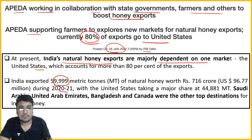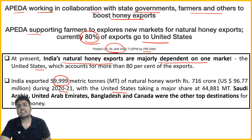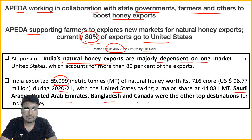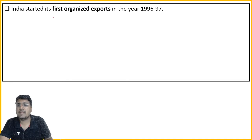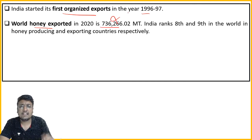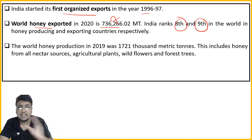The major share was to the US. In 2021, exports were impacted due to COVID and testing issues. Other markets include Saudi Arabia, UAE, Bangladesh, and Canada. Honey exports from India started in 1996-1997. India is the 8th largest producer and 9th largest exporter in the world - which was the basis for the two previous questions.